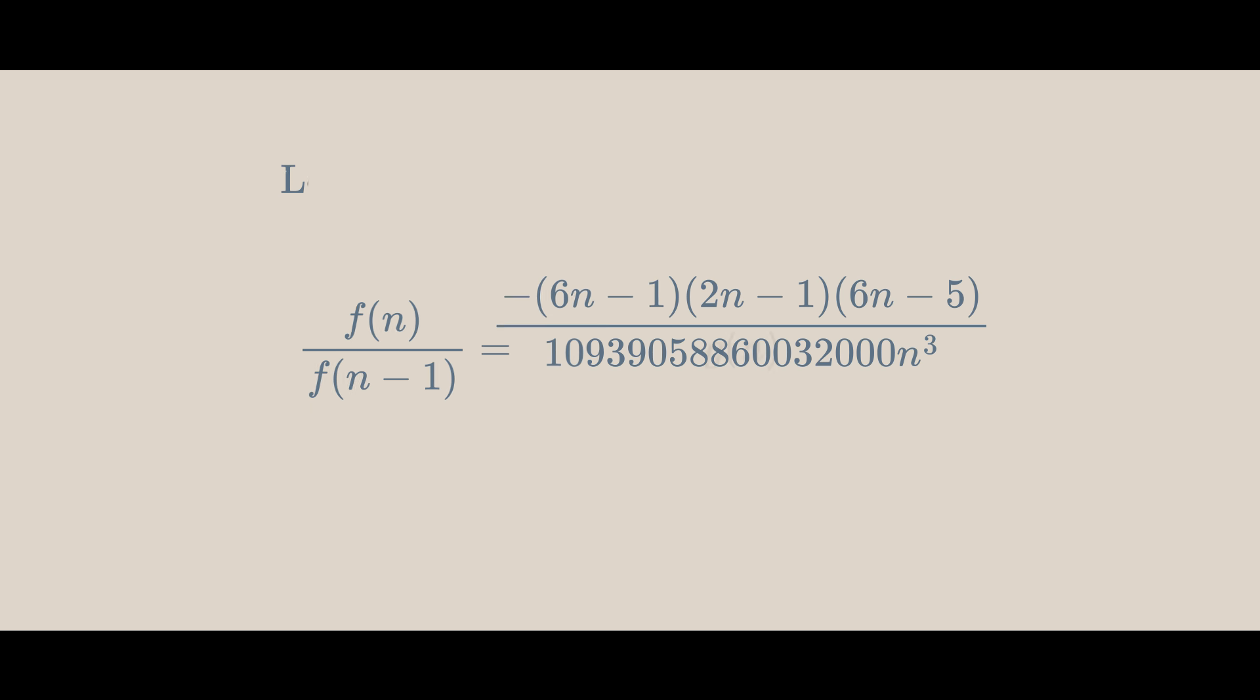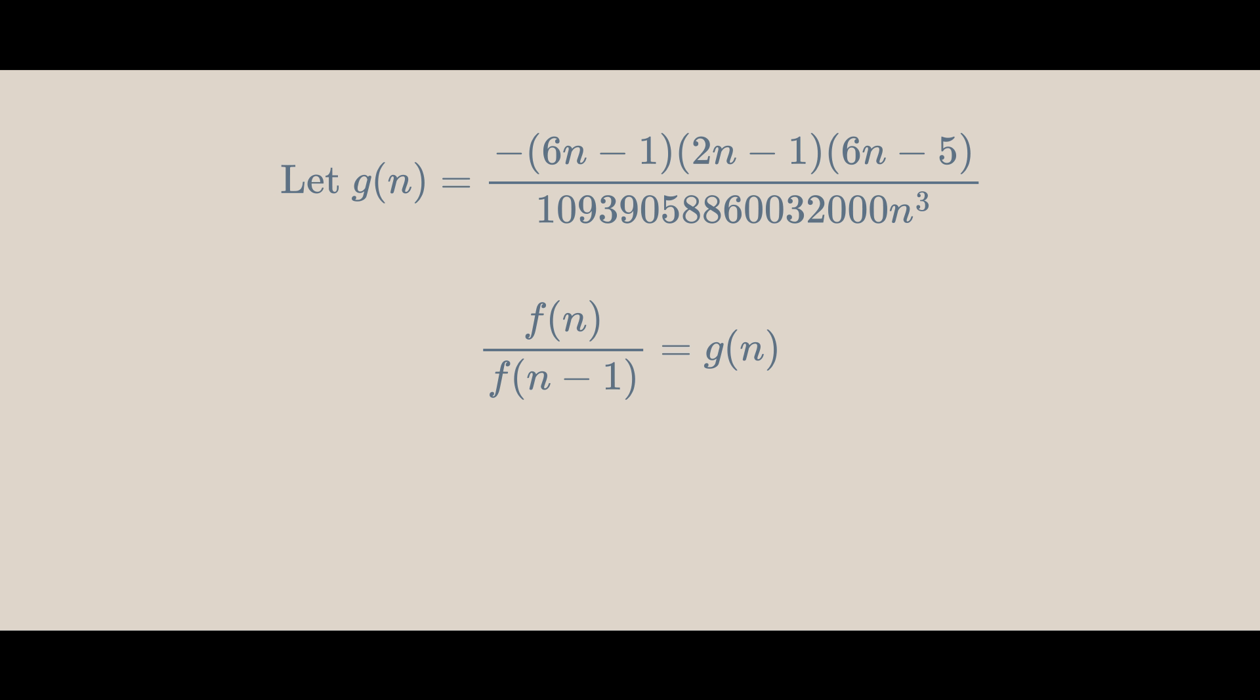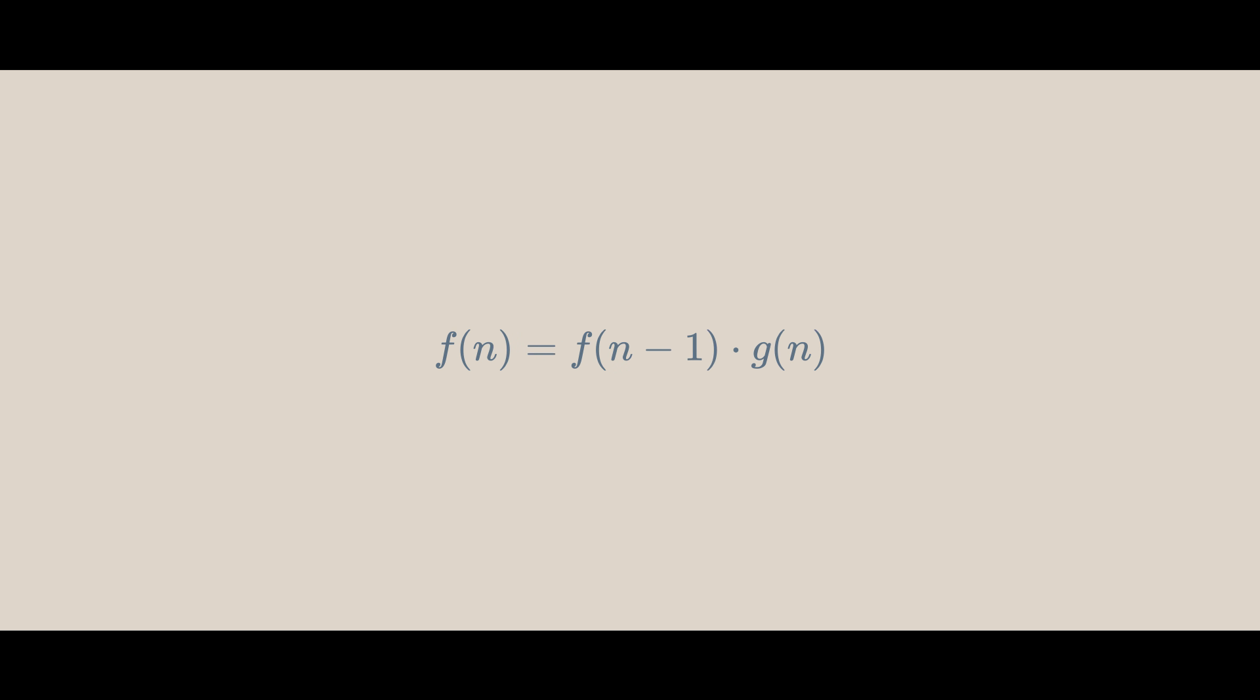And this is our final result for f(j+1) over f(j). Let's define this to be g(j). So, if we have f(j), we can find f(j+1) by multiplying by g(j). Now, it's important to note that f(0) is 1 from the original definition of f.